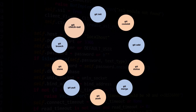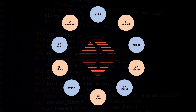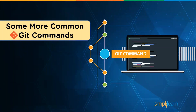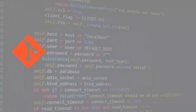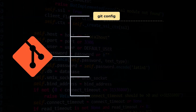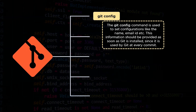Now that we know the top 10 commands, let's have a look at another 5 commands that are used along with these commands while we work on git. The first command in this section is the git config command.